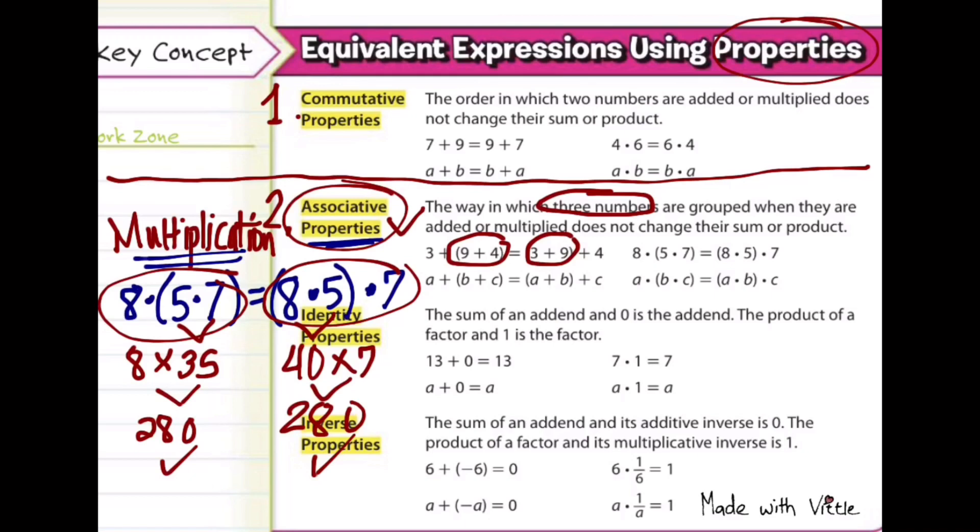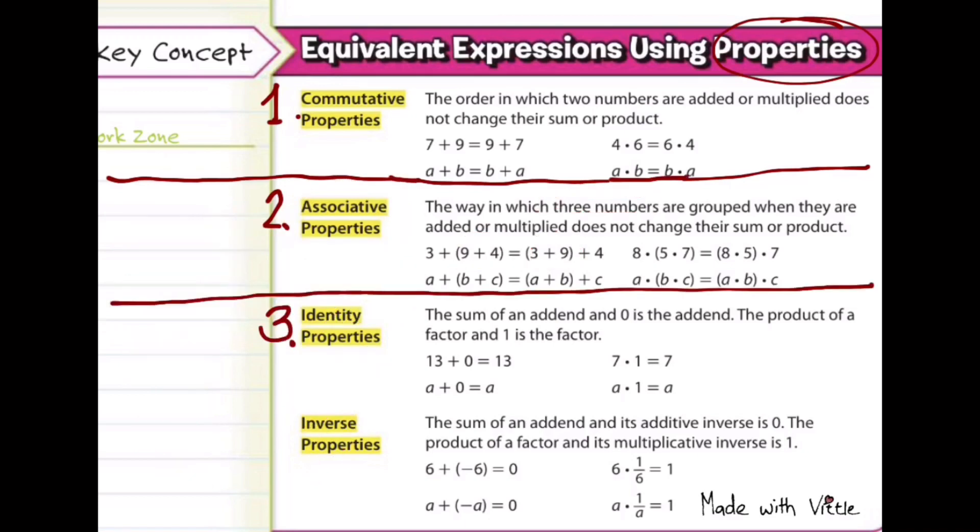Now identity properties for adding and multiplying. It is the sum of an addend and 0 is the addend. And also it is the product of a factor and 1 as the factor. So what do we mean by that? Identity means you're just going to go back to the original number, to its own identity. So how do we do that in adding? You just add 0 to the number, so it's going to become the same number. Like 13 plus 0, it's still going to be the addend, 13.